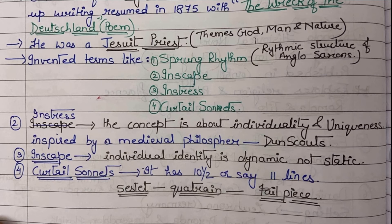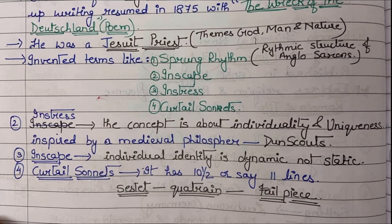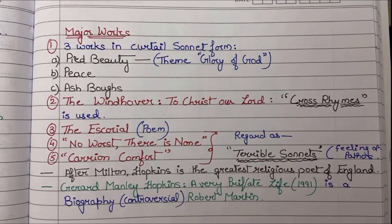A curtal sonnet has ten and a half or eleven lines total. It is distributed as follows: first a sestet — six lines, then a quatern — four lines, and then a tailpiece — one single line. So six plus four equals ten, plus one equals eleven. This is how G.M. Hopkins wrote curtal sonnets.